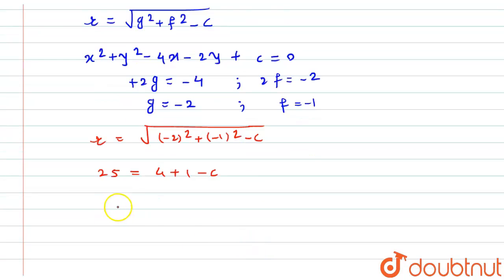Minus C will go to that side becoming plus C. 4 plus 1 will become 5, 25 comes to this side becoming minus 25. From here we get the value of C equals minus 20, and this is what's asked in the question.